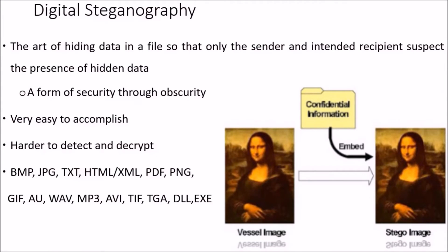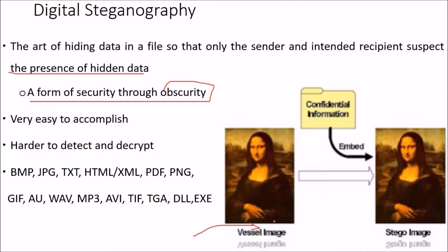Digital steganography is the art of hiding data in a file so that only the sender and intended recipient suspect the presence of hidden data. This is a form of security through obscurity. For example, confidential information can be embedded into a carrier image such as the famous Mona Lisa image to produce a stego image. This is relatively easy to accomplish but harder to detect and decrypt, and it can be performed on most file formats.